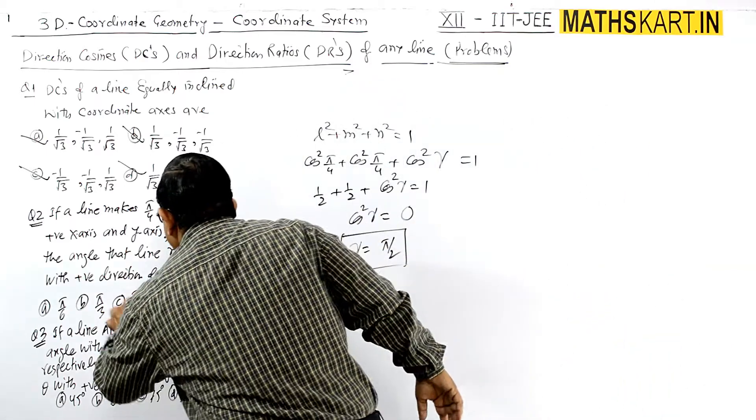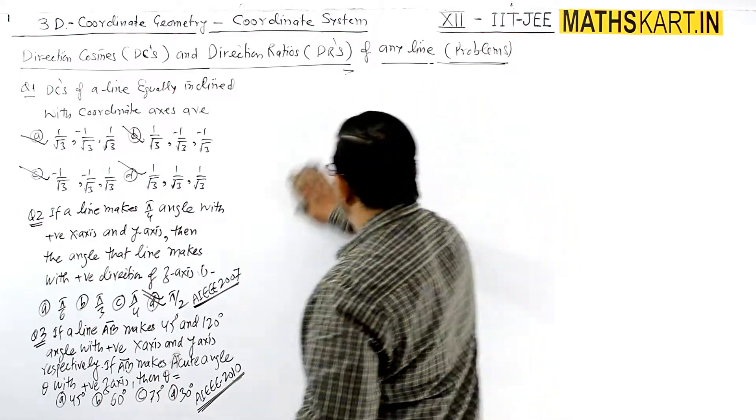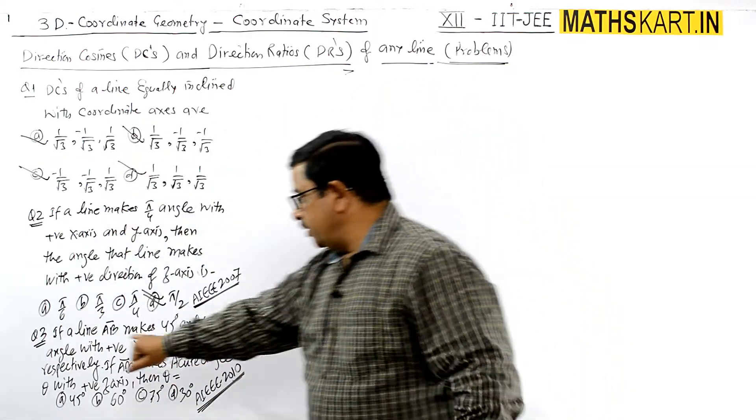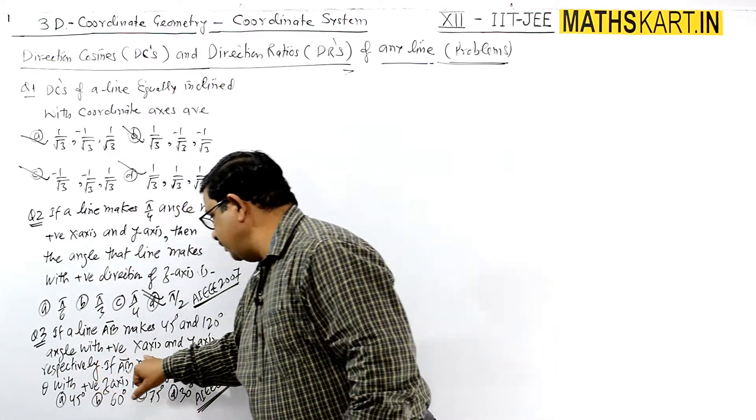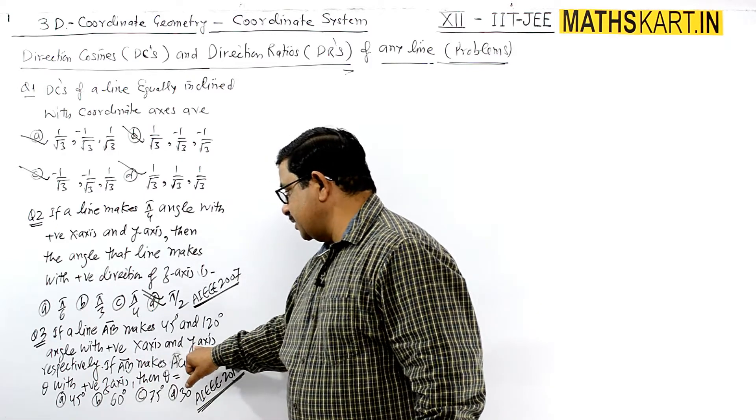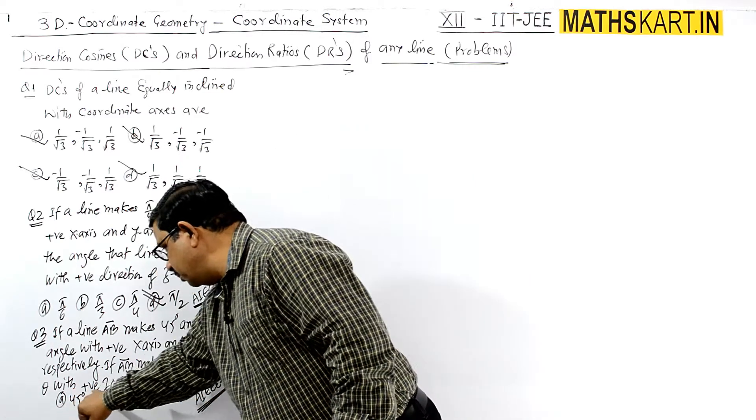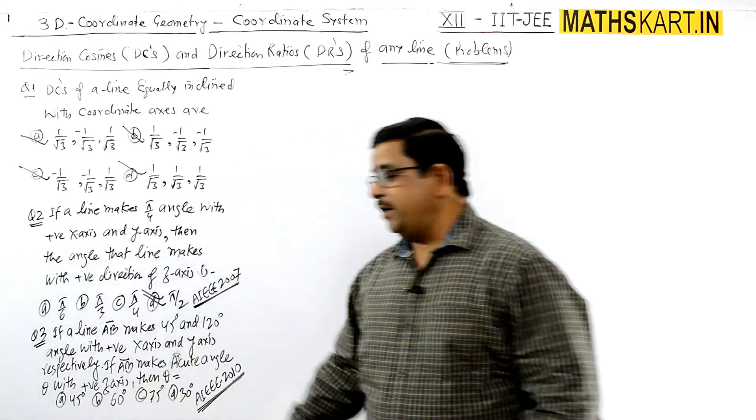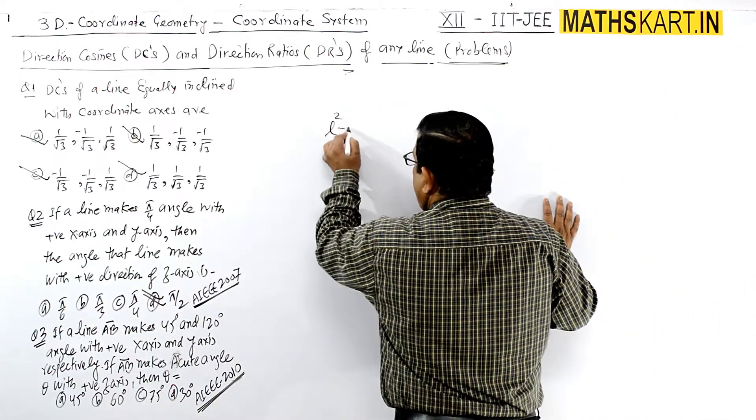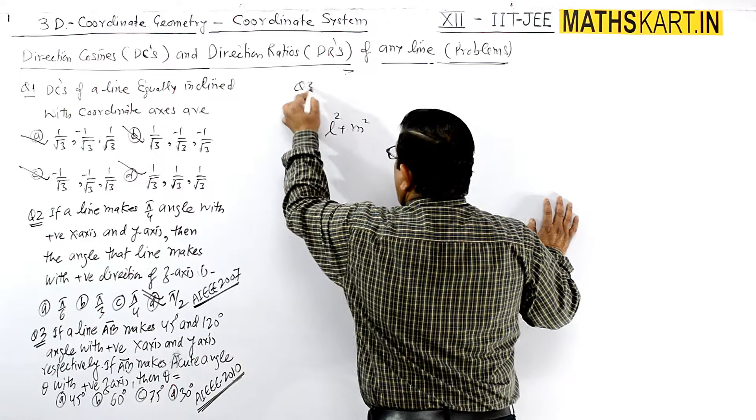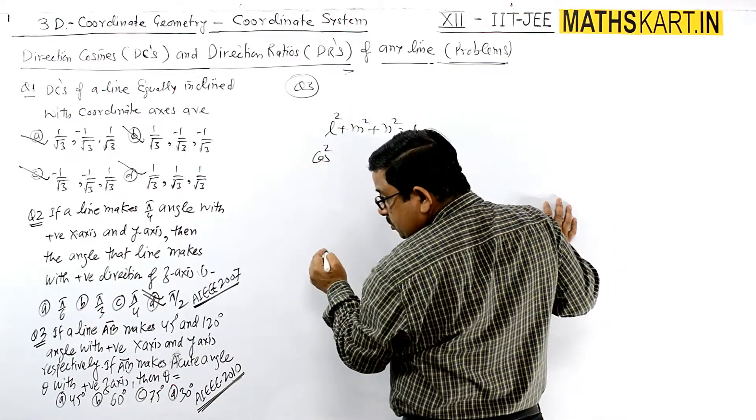After this, we come to question number 3. If a line AB makes 45° angle and 120° angle with positive x-axis and y-axis respectively, and AB makes acute angle θ with positive z-axis, then find θ. Again we write L² + M² + N² = 1, so cos²(π/4) + cos²(120°) + cos²θ = 1.